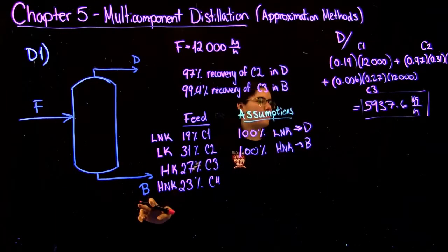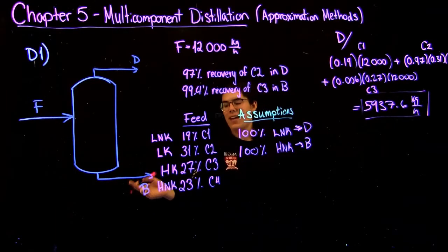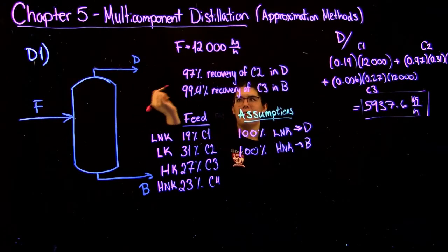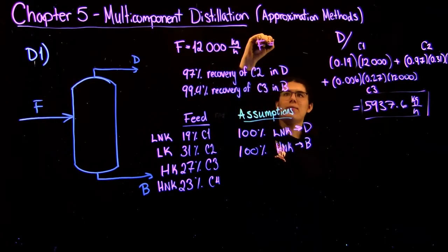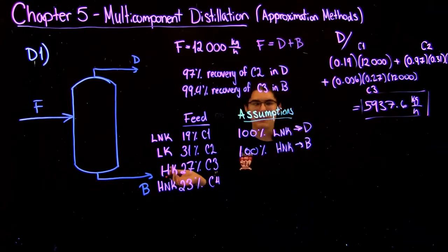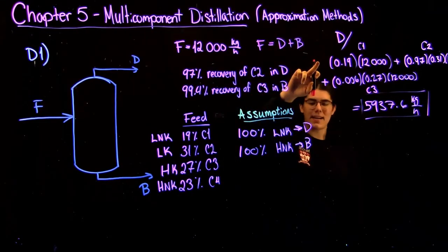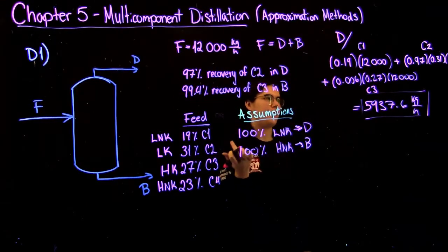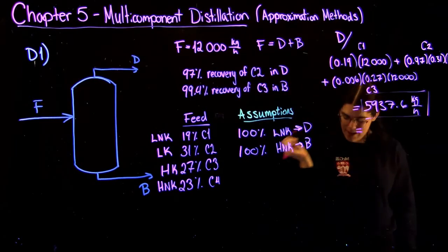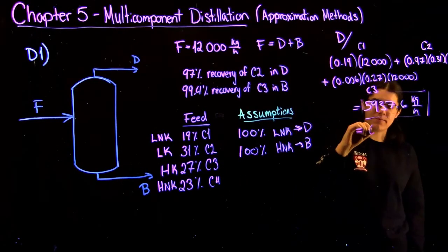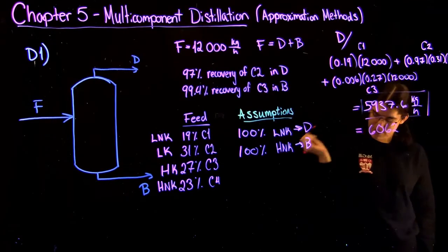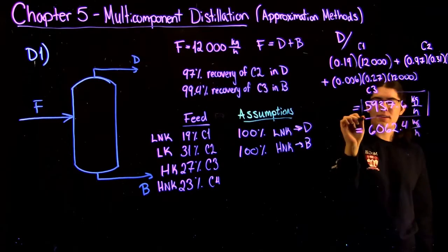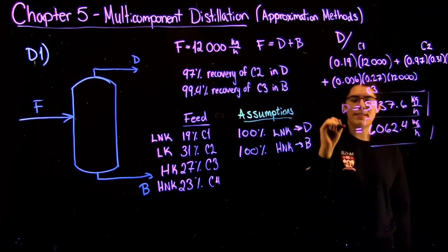Now, the bottoms total flow rate, you can find one of two ways. The easy way is just to subtract the distillate from the feed, since we know F equals D plus B from our overall mass balance. Or you can repeat this exact same procedure, going component by component, and using the information you have to add it all up. So if you do that, you get a bottoms flow rate of 6062.4 kilogram per hour. It's just super easy addition.